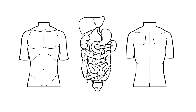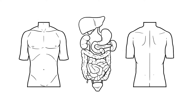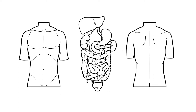Here we have an illustration of the abdominal viscera in the centre, with anterior and posterior views of the trunk on either side. If you're drawing along, you can find a link to this illustration below. Looking at the individual organs, we can see that each of them has a specific site of referred pain.